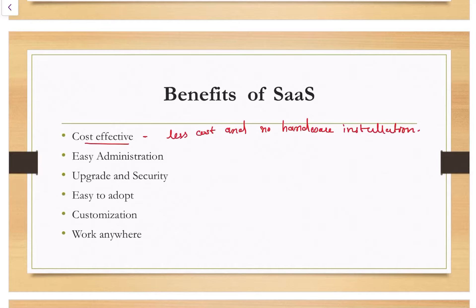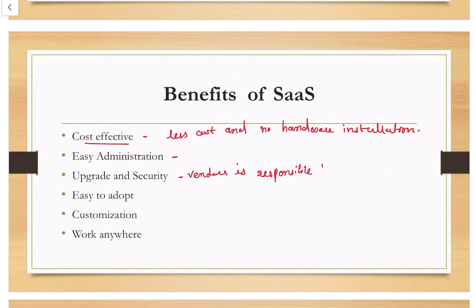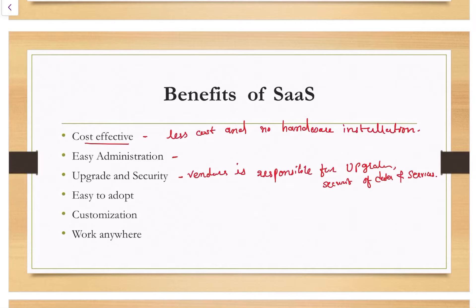SaaS is cost effective because there is availability of service with less cost, no hardware installation, and no overhead. The second benefit is easy administration — it is easier for administration work. The third benefit is upgrade and security: the SaaS vendor is responsible for upgrades, uptime, and security of the data and service.